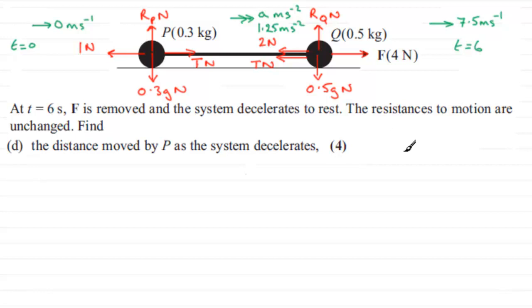Well first of all, let's just draw a sketch of those particles, P and Q. Now we know that when T equals 6, in an earlier part of the question we found that the particles were moving with a speed of 7.5 metres per second.